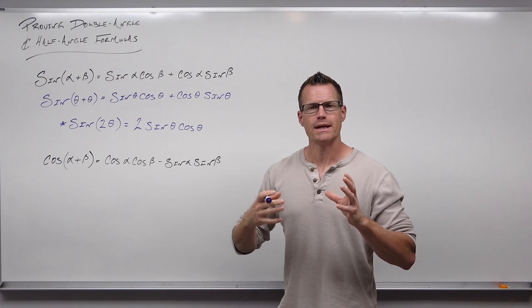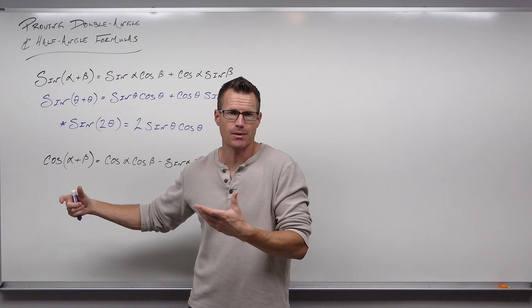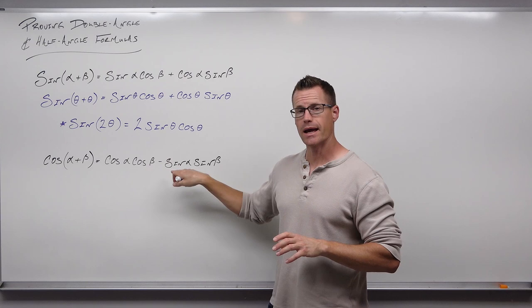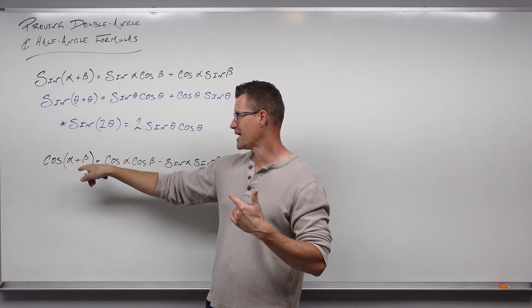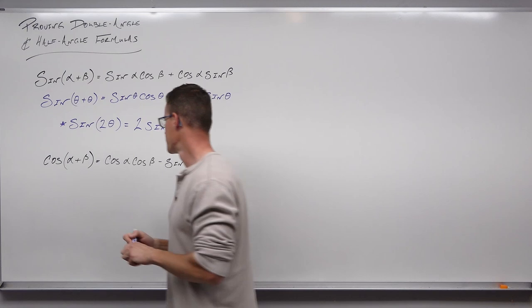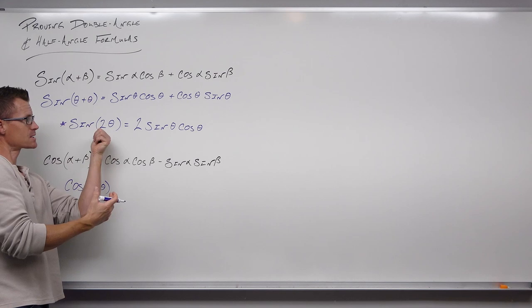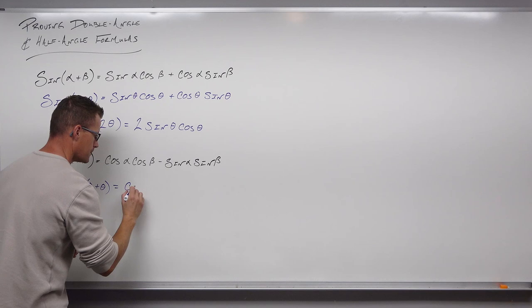Now let's try cosine of alpha plus beta. We're going to do the same thing — if we want a double angle formula, instead of alpha plus beta, let's consider them both to be theta. That gives us cosine of two theta. And in the same fashion, if alpha and beta are both the same angle theta, then all of those angles get replaced with theta as well. This is the sum formula for cosine, but now we have cosine theta, cosine theta minus sine theta, sine theta.